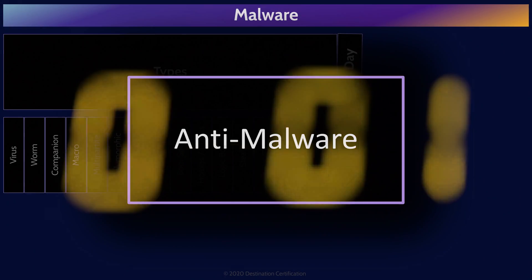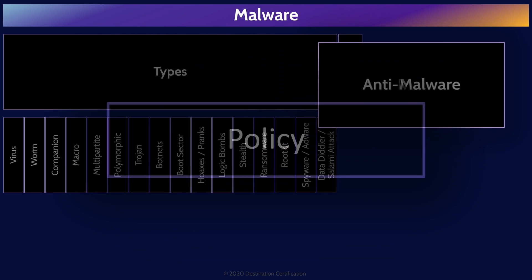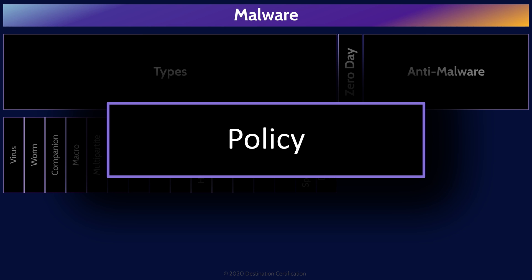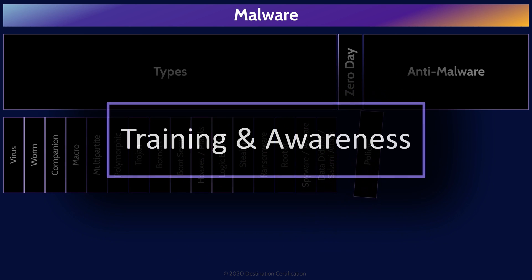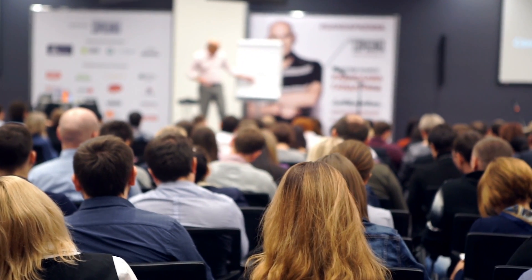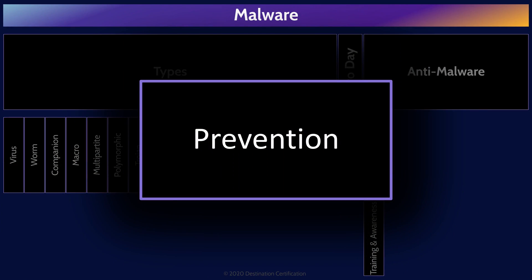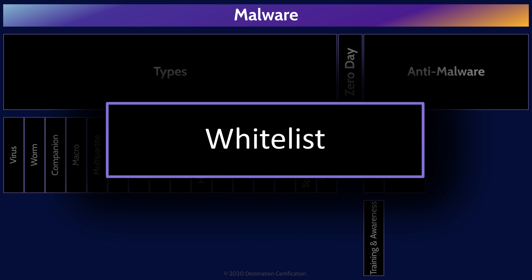Now let's talk about how we prevent, detect, and defend our systems against these various types of malware. We first need a policy that states that we need anti-malware systems and software, clearly defines roles and responsibilities for users, and includes training and awareness. Since a virus must be triggered by a user, one form of anti-malware is making users aware of what malware is and training them not to open macro-enabled Excel files from strangers. One method of prevention is whitelists — a list of programs allowed to run on the system — so any software not on the whitelist, like malware, is not allowed to be installed and executed.